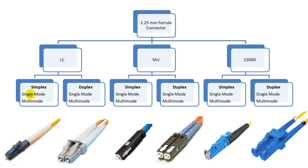Both types have single mode fiber and multimode fiber versions available. The next major type is the MU connector. MU connector looks like a miniature SC connector. MU connector is also available in simplex, single fiber, and duplex, 2 fiber versions. Both simplex and duplex also have single mode and multimode fiber versions available.